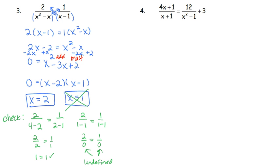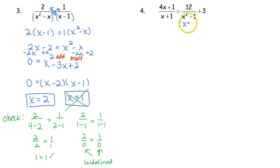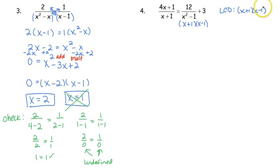Moving on to number 4: I've got one fraction on the left and two terms on the right. I can't easily move that 3 somewhere else, so I'm going to use the LCD method. The denominator on the left factors as x plus 1 times x minus 1 — difference of two squares. So our LCD is x plus 1 times x minus 1.